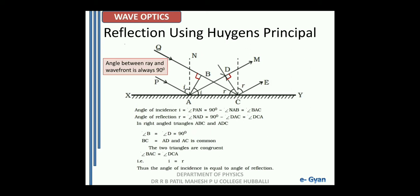Therefore, the two triangles ABC and ADC geometrically are found to be congruent. Due to the congruency, we can say that angle BAC is equal to angle DCA. We know BAC is the angle of incidence and DCA is the angle of reflection. So hence, I is equal to R. Thus, the angle of incidence is equal to the angle of reflection. This is how we explain the reflection phenomenon using Huygens principle.